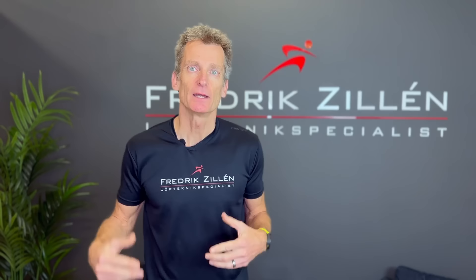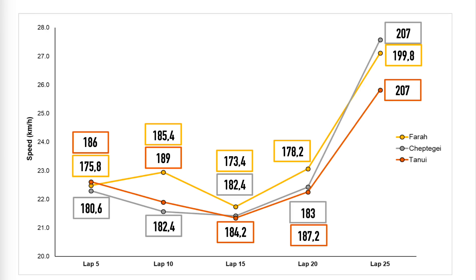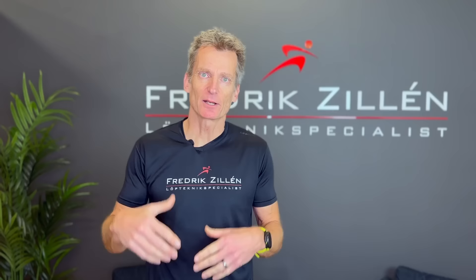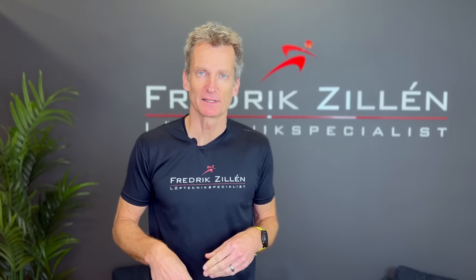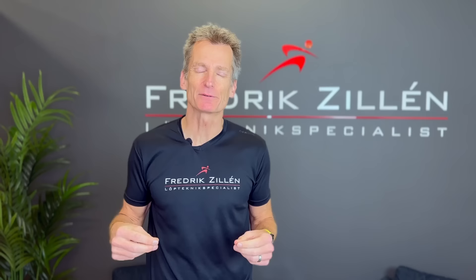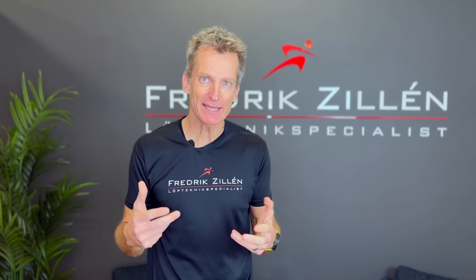We can now follow Mo Farah's cadence and see how clearly it follows his pace — his cadence is in the golden yellow boxes on this picture. On lap 5, Farah has a cadence of 175.8. On lap 10, he runs at a faster pace and his cadence is 185. On lap 15, his speed drops to its lowest and his cadence has dropped to 173.4. The last lap is of course the fastest as everyone sprints for the medals, and even though Farah is known for a lower cadence, here it's about 200 steps per minute — a difference of about 27 steps per minute during the same race.